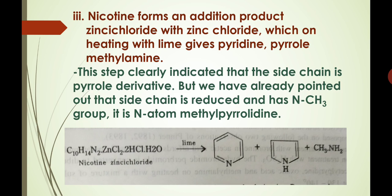Nicotine forms an addition product with zinc chloride, which on heating with lime gives pyridine, pyrrole, and methylamine. This step clearly indicates that the side chain is a pyrrole derivative. But we have already pointed out that the side chain is saturated and has an N-methyl group, so it is N-methyl pyrrolidine, as represented in this reaction.